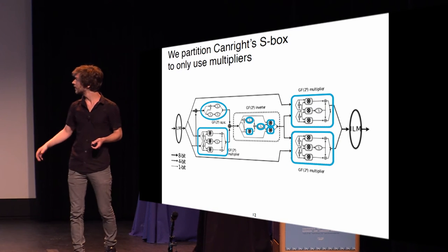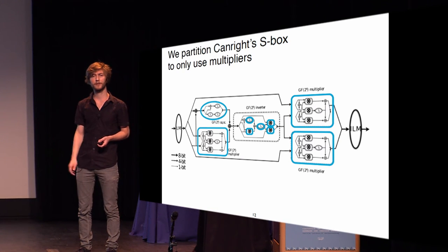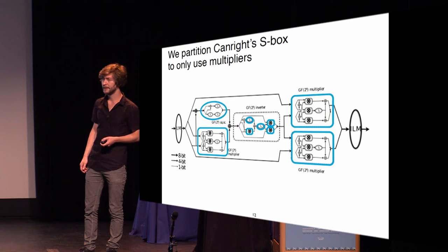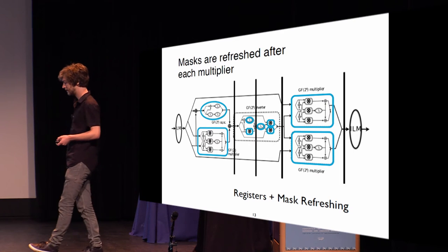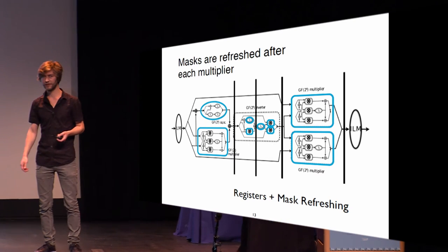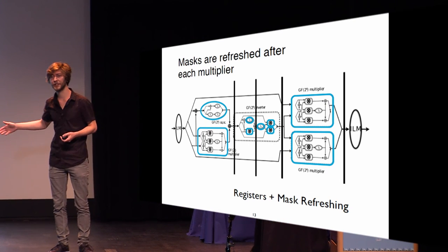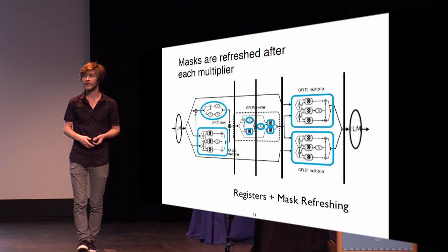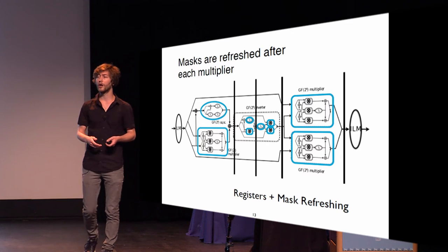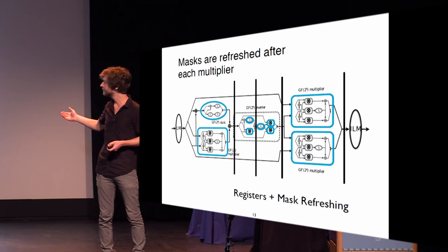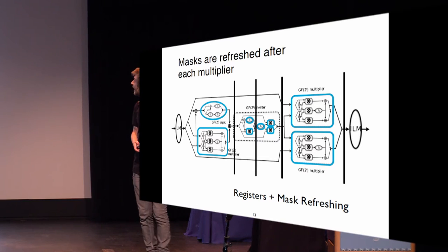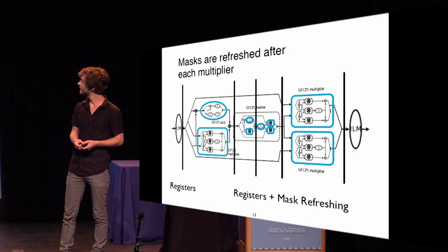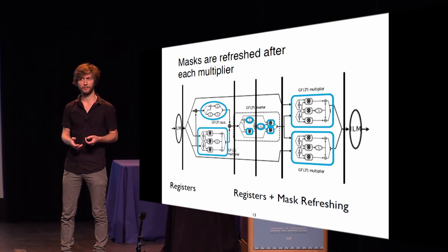That gives us less cost on randomness and area, which is why we choose to only mask the multipliers. This is how we partition our design. Since we require uniformity of inputs at every stage, we need to clock each of those values into registers. We will also refresh masks after every stage, and to satisfy independent inputs we need to put a register immediately after the linear map.